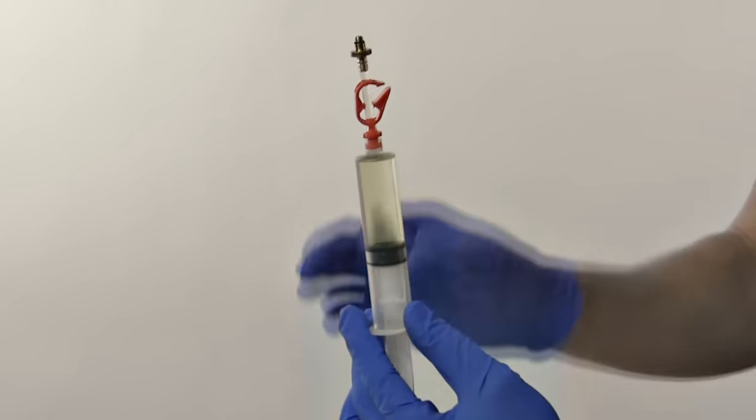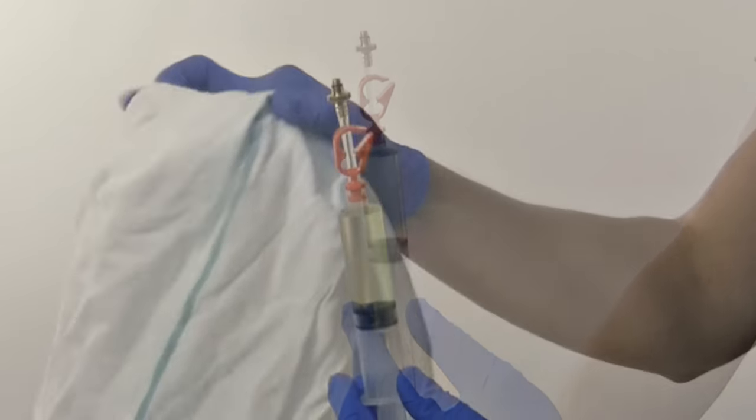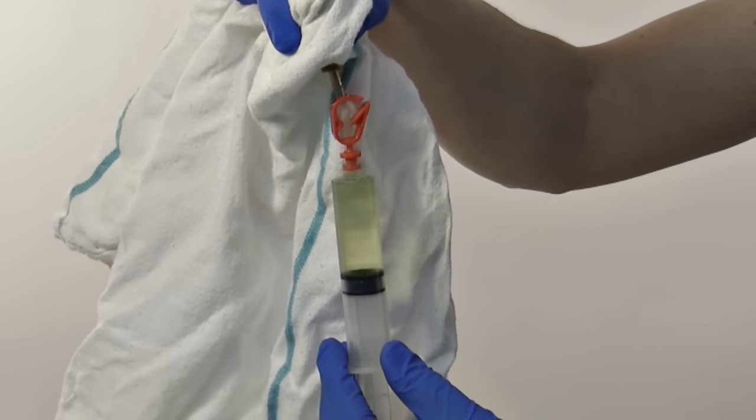Hold each syringe with the tip pointed up and tap the side of the syringe with your finger to bring any air bubbles to the top. Place a towel around the tip and slowly push the air bubbles out of the syringe.